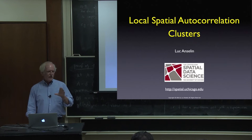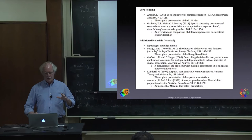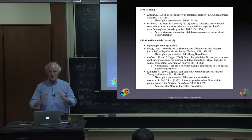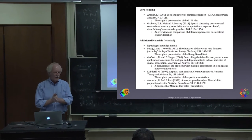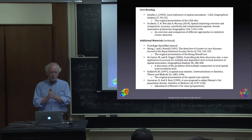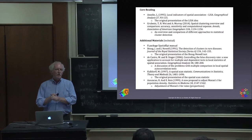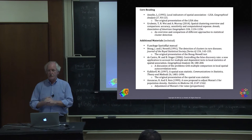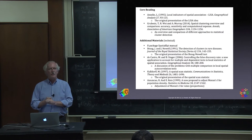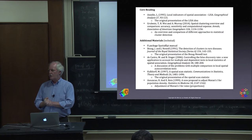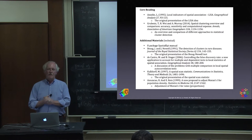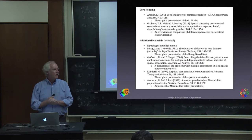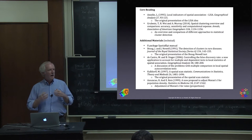This is really two topics in one lecture. The first part covers local indicators of spatial autocorrelation, which let us identify clusters statistically. In the second half, I'll talk about how to deal with the specific problem of rates or proportions. Rates are special because by construction their variance is not constant.